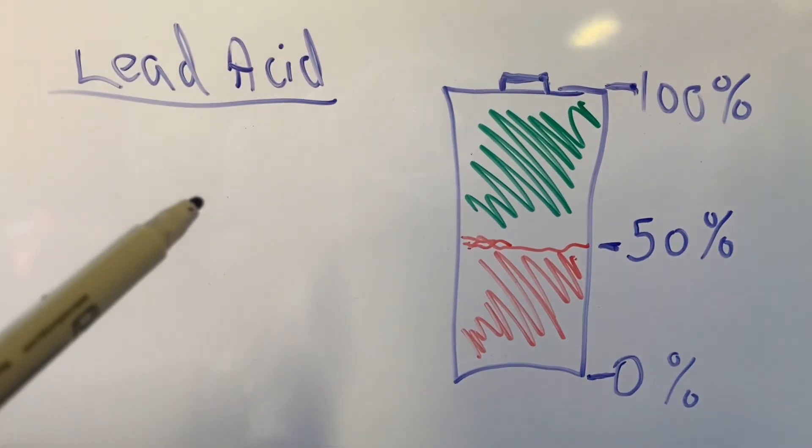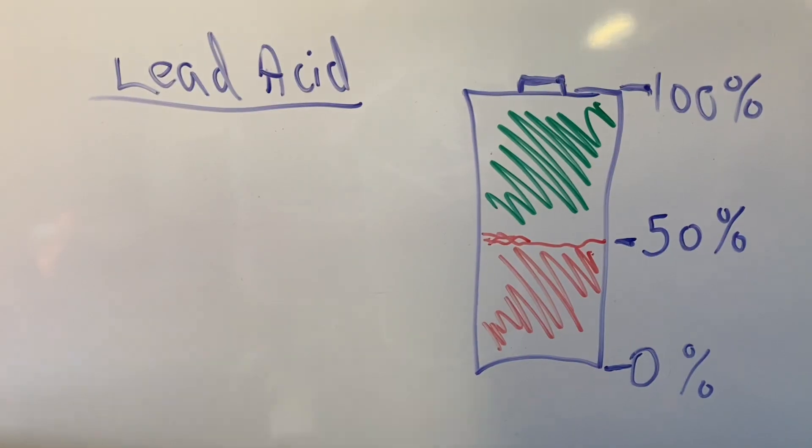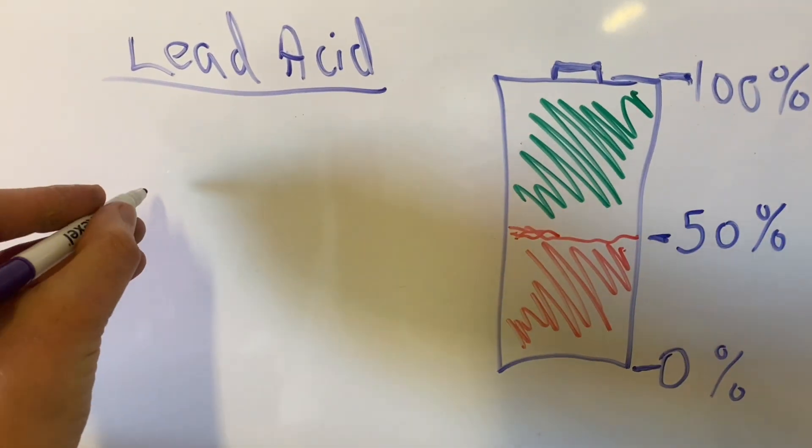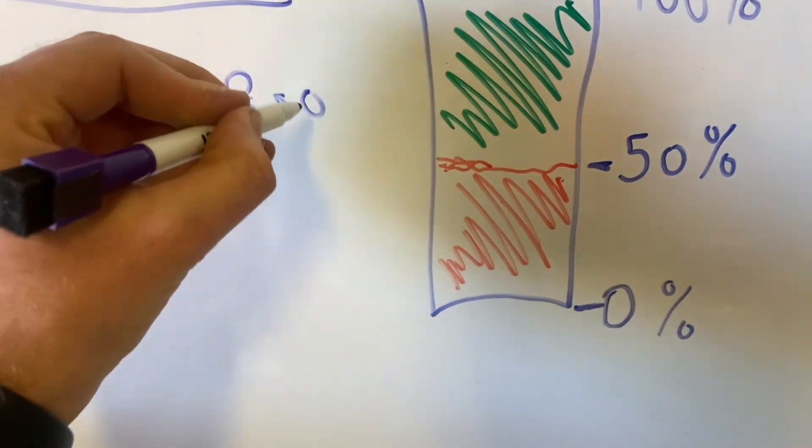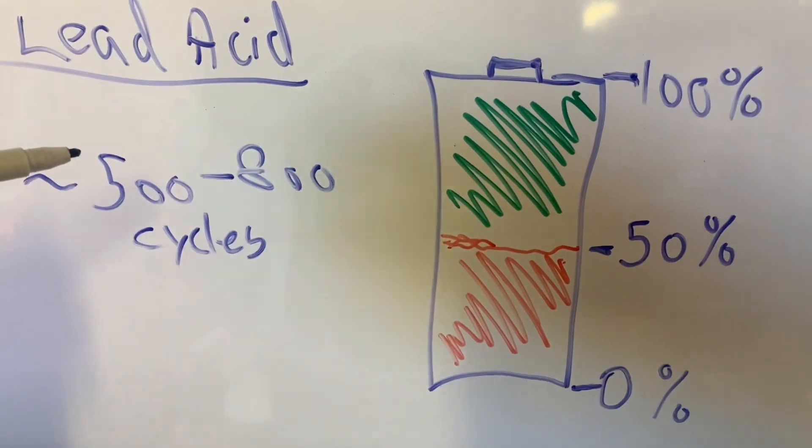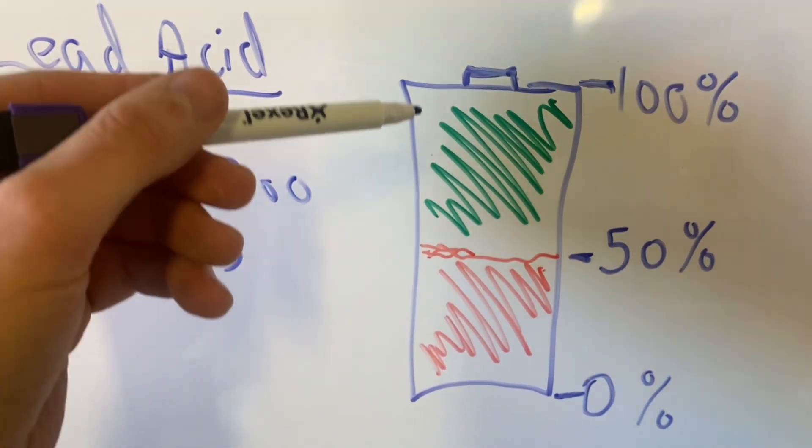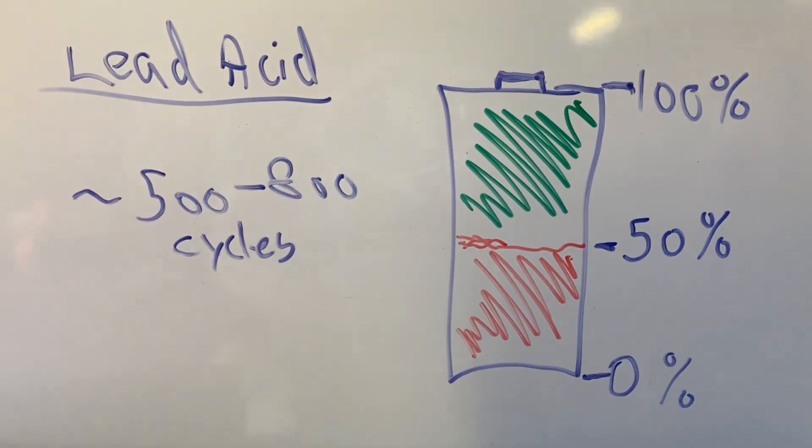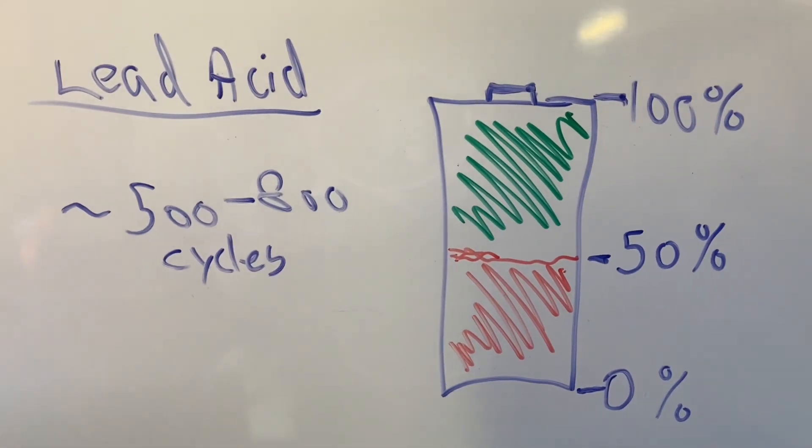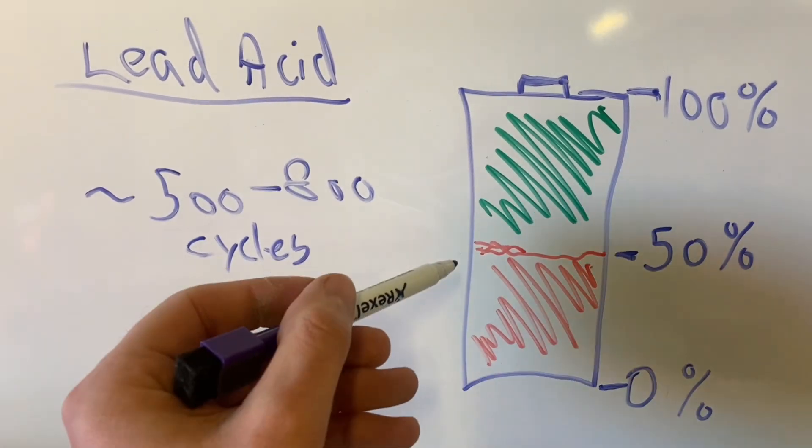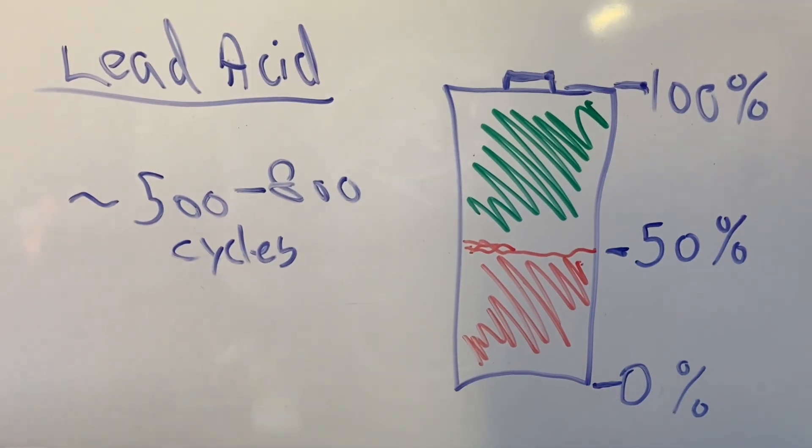Keeping lead acid batteries at about at least 50% state of charge, you will get around 500 to 800 cycles. But if you keep it at, say, 70% state of charge, and always maintaining the state of charge level, you will increase its lifetime. And if you go below 50% often, you will decrease its lifetime.